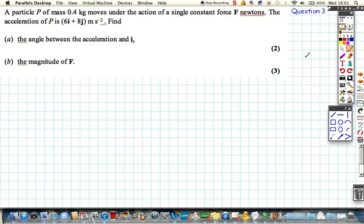We've got a particle of mass 0.4, it's moving under the action of a single constant force. The acceleration of that is this. Find the angle between the acceleration and the i. So we're just looking at the acceleration vector, which is this one for the first.